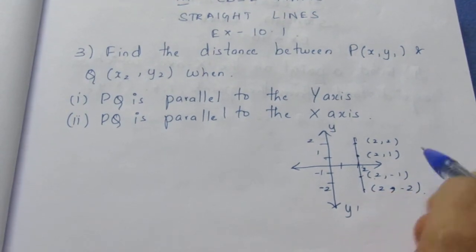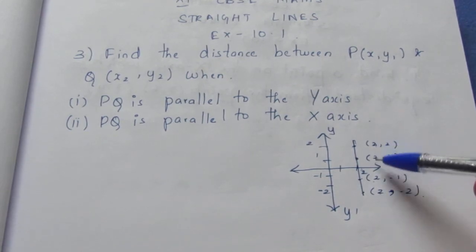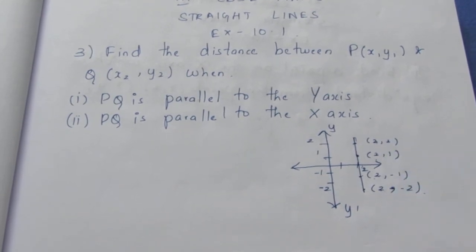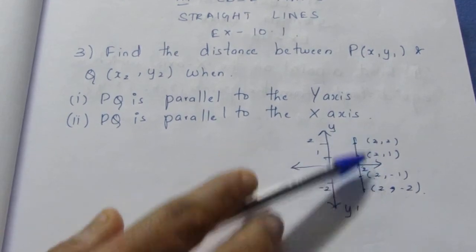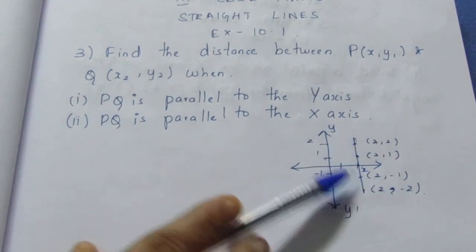Now if you analyze this line, analyze the points, you can see here all the X values are same. There is only difference in the Y value and all your X values are same.